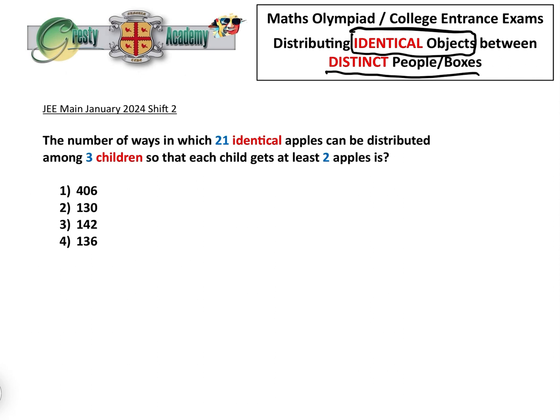Okay, so it's from the JEE Main January 2024, shift 2. The number of ways in which 21 identical apples can be distributed among three children, well children are presumed to be distinct, so that each child gets at least two apples.